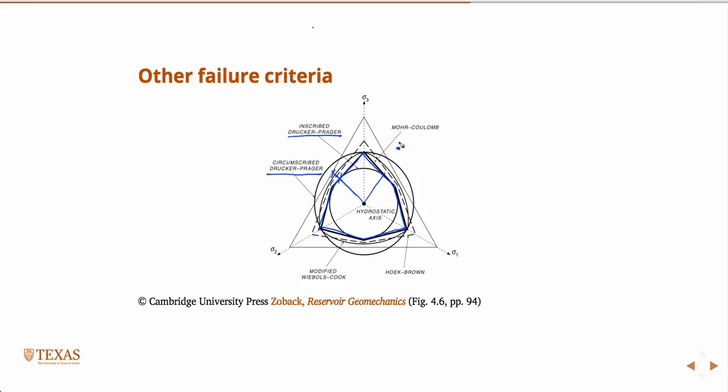We're not doing any of this in this class — you take my advanced geomechanics graduate course for that. So if you find yourself outside the yield surface, you have to return yourself to it. The simplest way is what's called a normal return — you compute the normal to the yield surface, and you project yourself back onto it normally. Well, the Mohr-Coulomb model has these sharp corners. What if I accidentally wound up right there and need to return myself normal to that sharp corner? What's the normal vector at that corner? It's undefined.